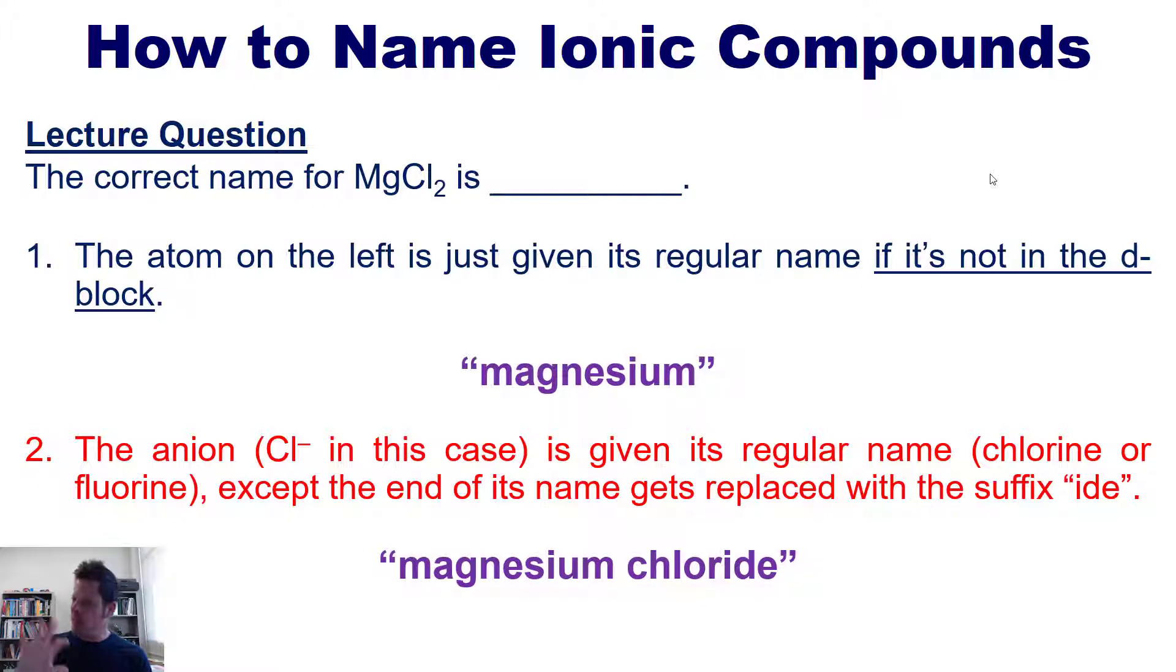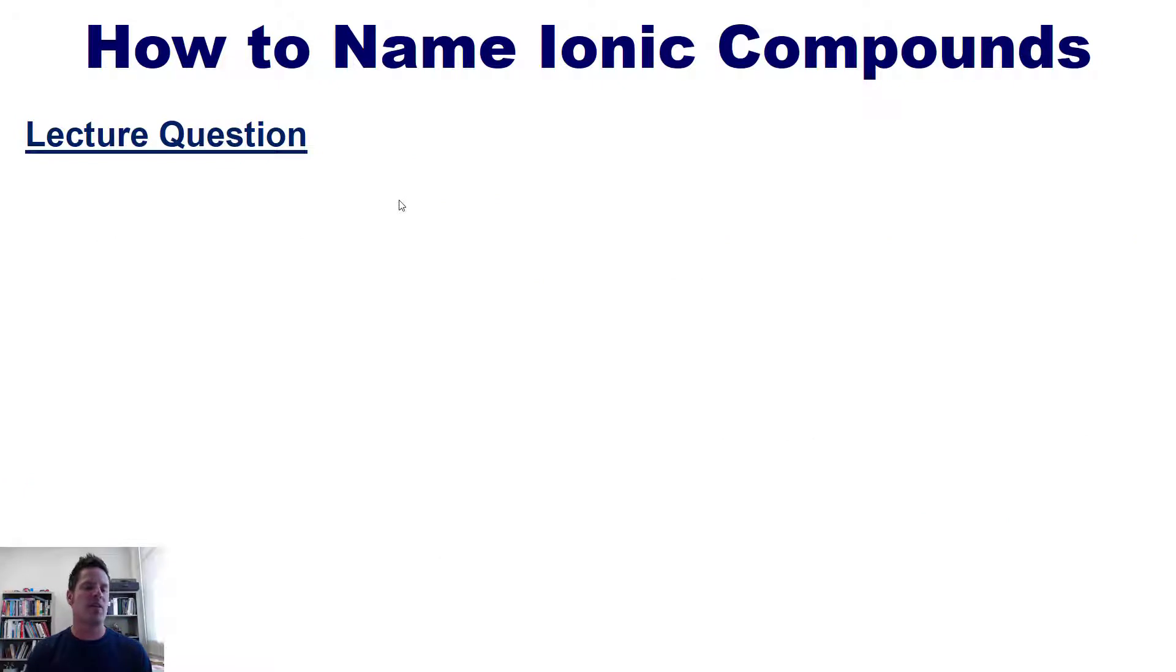Now one thing I need to stress here that might become confusing later on is that when naming ionic compounds, we never ever include prefixes like mono, di, tri, tetra, penta. We never ever include those. We do include those prefixes in the names of molecular compounds, which I'll cover in a later video. Let's do another example.